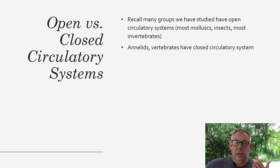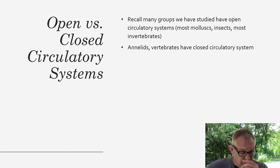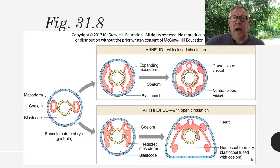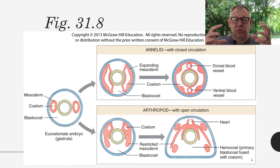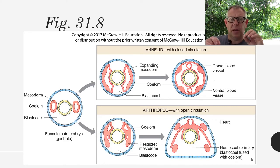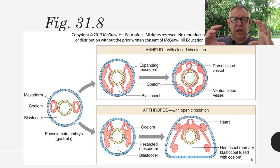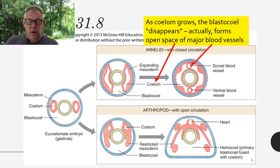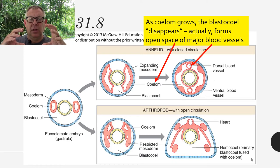We also see closed circulatory systems in things like the annelids — the segmented worms — and vertebrates. You can kind of see how these would form based upon the general embryological development of different organisms. Remember those different germ layers that form when the animal is developing — you can see how as the mesoderm forms it forms a cavity called the coelom, or the coelomic cavity. In the top example here you can see how that coelom is forming and the blastocele is disappearing.